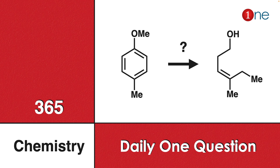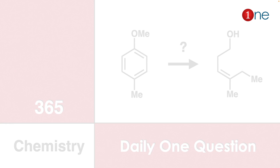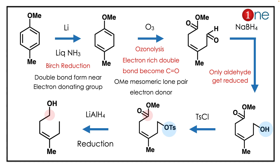The answer involves multiple steps. You have to open the ring. The only way to open the ring is Birch reduction and ozonolysis. If you do the Birch reduction, the benzene gets reduced to a 1,4-diene, so the double bond forms near the electron-donating OMe and methyl groups.